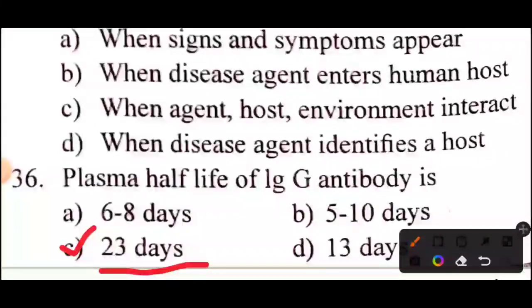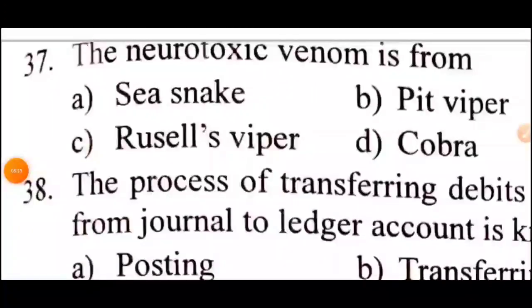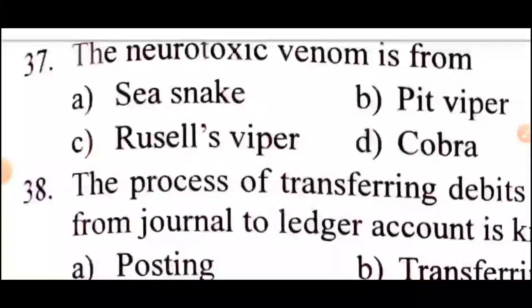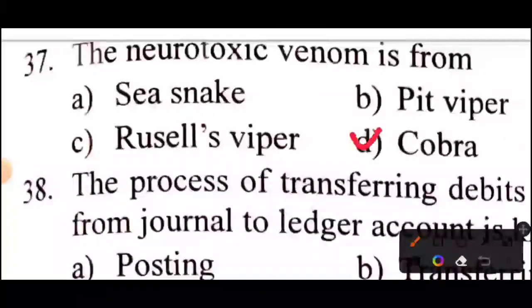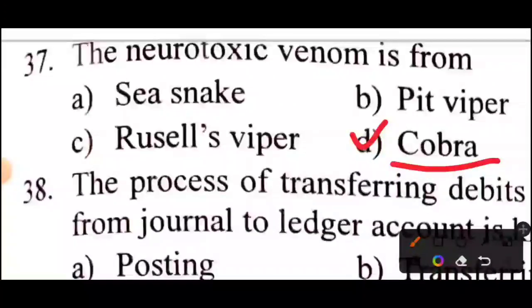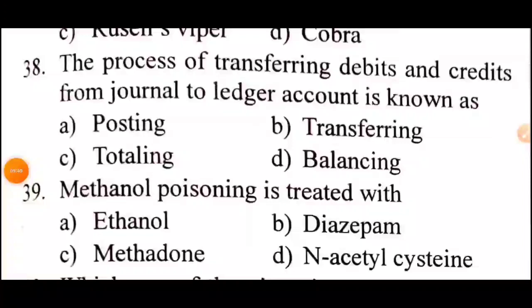Question 37 of 60: The neurotoxic venom is from? Answer is Option D: Cobra.